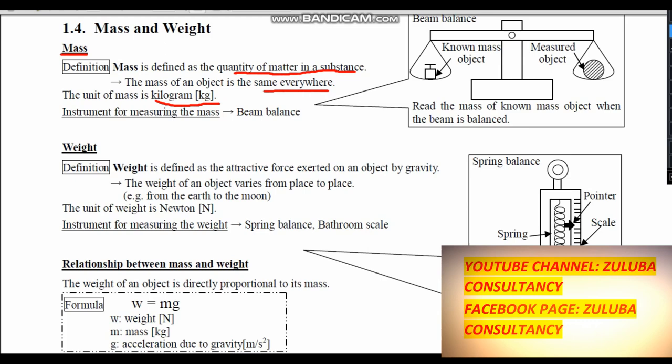The instrument used to measure mass is a beam balance, and in modern technology we are now also using electronic beam balances. The beam balance will always have a known mass, and when the known mass balances with the measured mass, we get the reading of the measured mass.